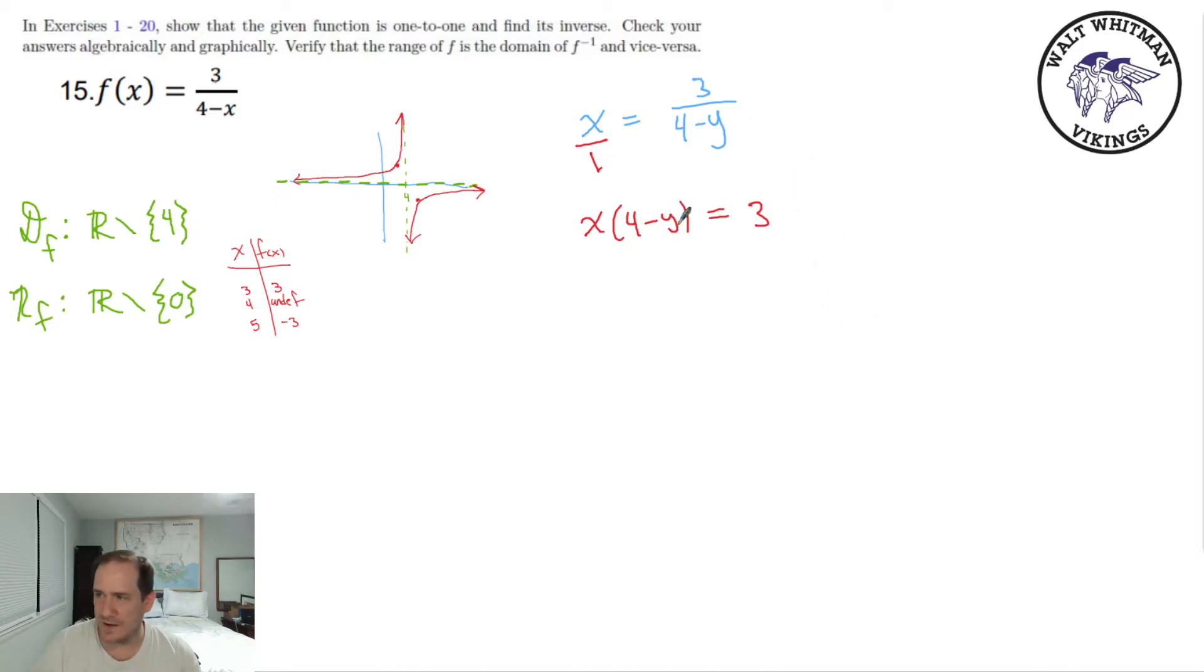Now to start trying to get y alone, we gotta resolve these parentheses. That means distributing the x. So you get 4x minus xy, and that equals 3. So what you want now is any term that has y in it, we gotta get it all alone. So any term with y, we would push to the other side. And any term that doesn't have y, we'll pull to the other side. So this 3, I'd subtract it from both sides. So it's now over here with the 4x.